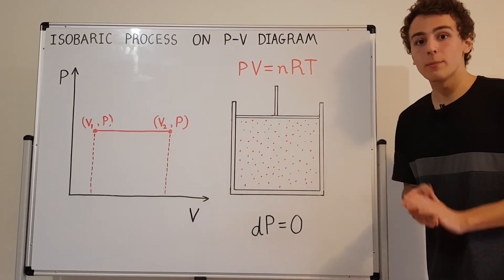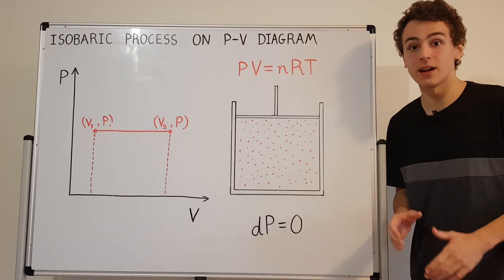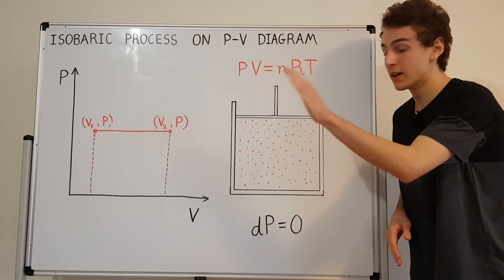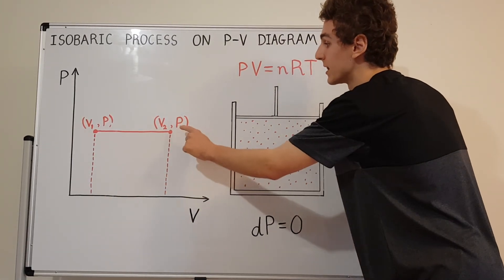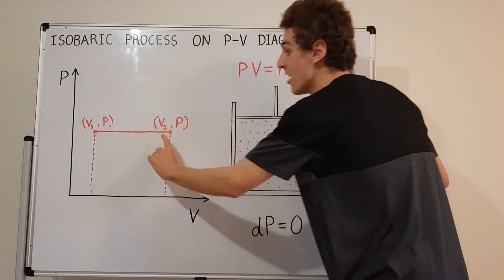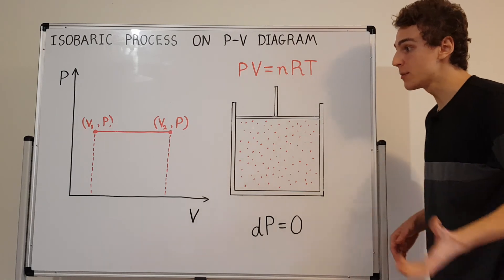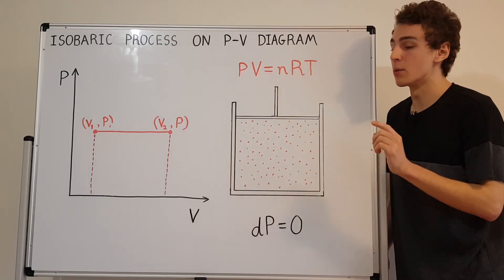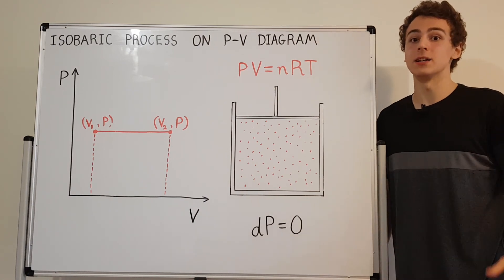The takeaway message: anytime you see a horizontal line on the PV diagram with no slope, that corresponds to an isobar at pressure P. Every point on that horizontal line has the same P. Volume can change, temperature can change, but pressure cannot change in an isobaric process with an ideal gas.